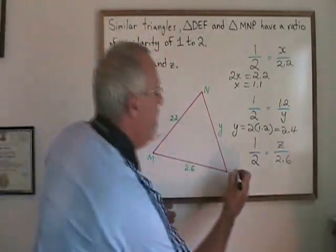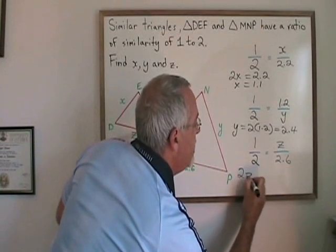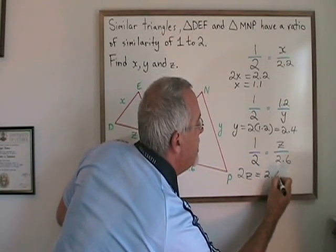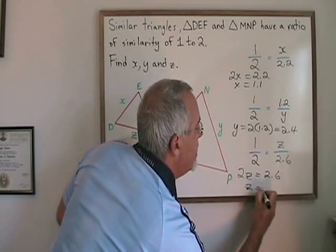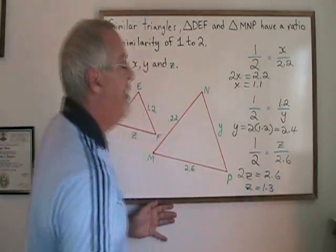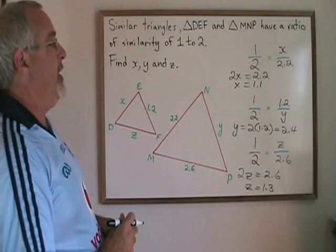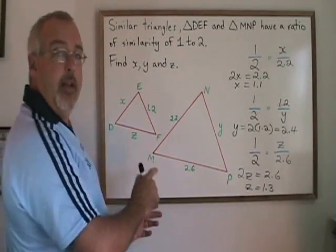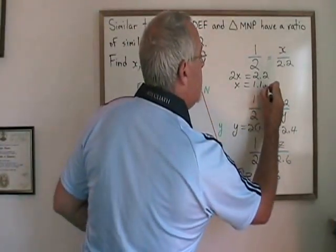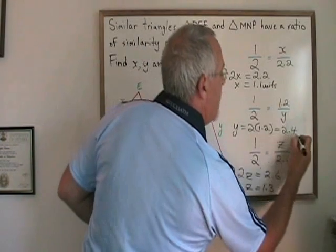When I cross multiply, I get 2Z is equal to 2.6, and Z is going to be equal to 1.3. In this case, we were not given any unit of measure, so what I like to do in that case is use the word units as my unit of measure.